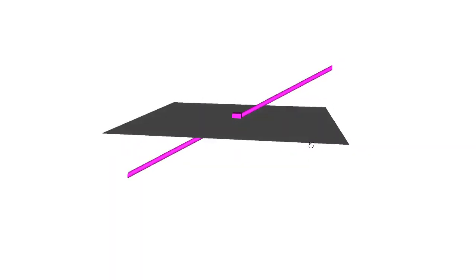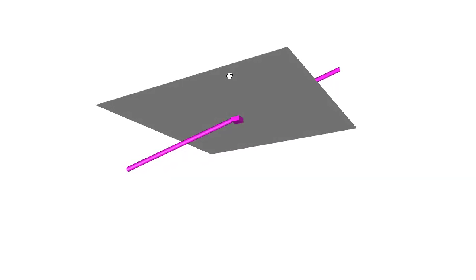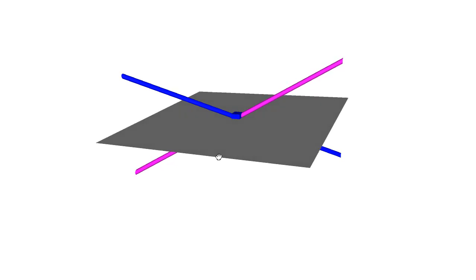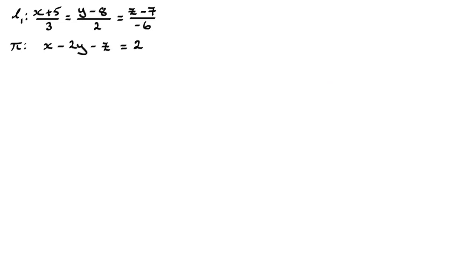Hi. Now, in this video, what I want to show you is that if we have a line that intersects a plane, how we go about finding the equation of the reflected line in that plane. So to illustrate this, what I've got here is an example where I've got a line L1 and a plane pi. And what I'm going to show you is how we get the equation of the reflection of L1 in the plane pi. But before we do this, it's important that I run through the method — it's quite involved.